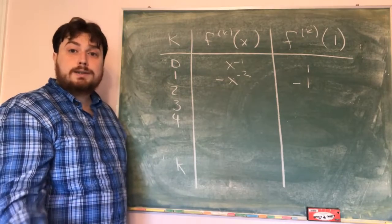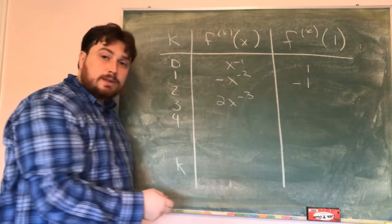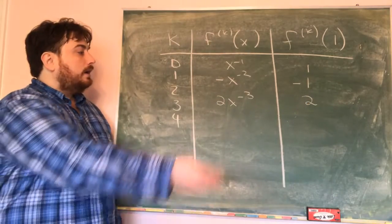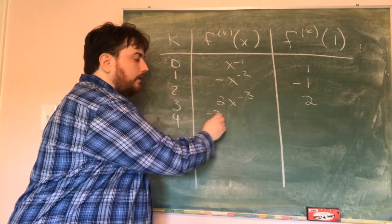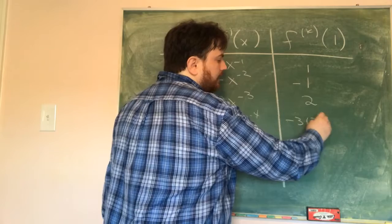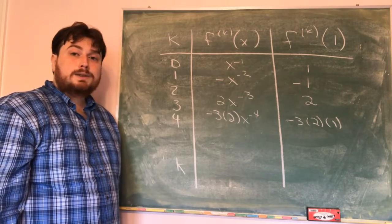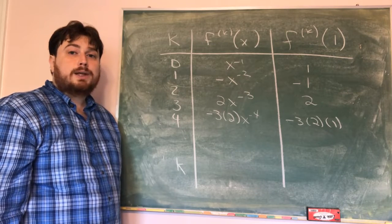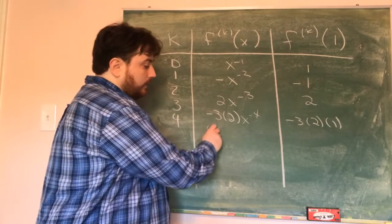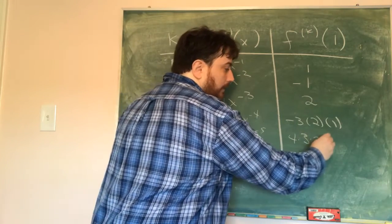If I take the derivative of the first derivative, I get the second derivative. The derivative of negative x to the negative 2 is positive 2x to the negative 3. Plugging in 1, I get 2 times 1 to the negative 3, which is just 2. For the third derivative, I get negative 3 times 2 times x to the negative 4, so negative 3 times 2 times 1. For the fourth derivative, I get 4 times 3 times 2 times x to the negative 5, giving 4 times 3 times 2 times 1.